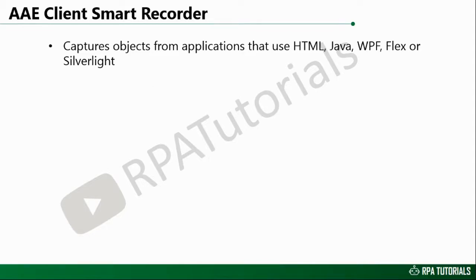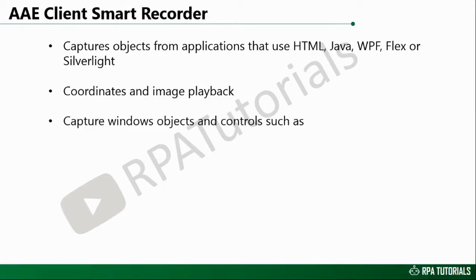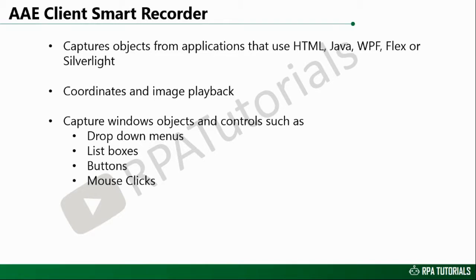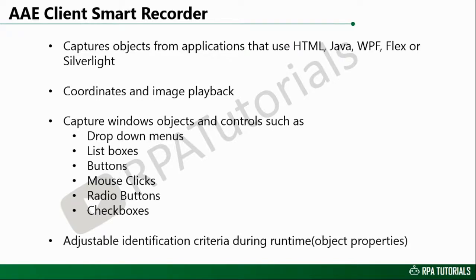It also captures coordinates and an image of the sections of the screen where the action is being performed while recording the task. Smart Recorder is a powerful tool that captures Windows objects and controls such as text from drop-down menus, list boxes, buttons, mouse click actions, and status from radio buttons and checkboxes. While running the task, it allows the user to define which properties to use while searching for objects on the screen.